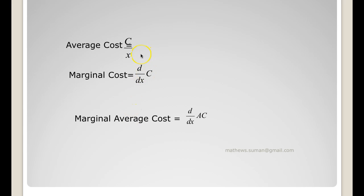Next we come to certain new terms: average cost is total cost by x, marginal cost is d/dx of the total cost, that is derivative of the total cost, and marginal average cost will be derivative of the average cost.